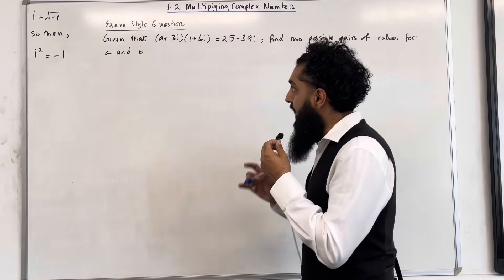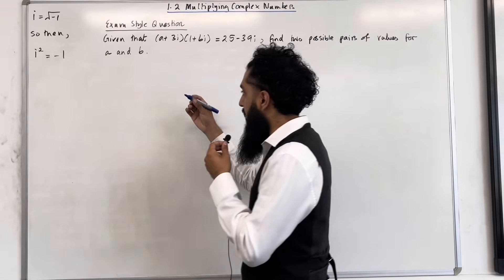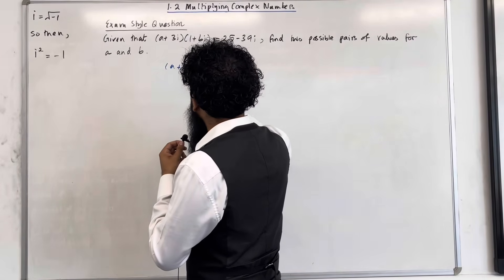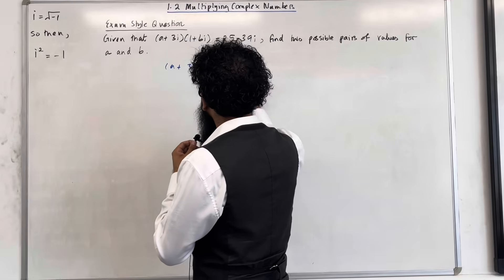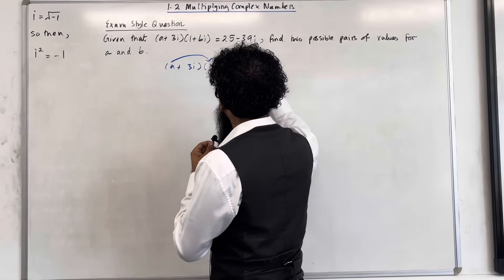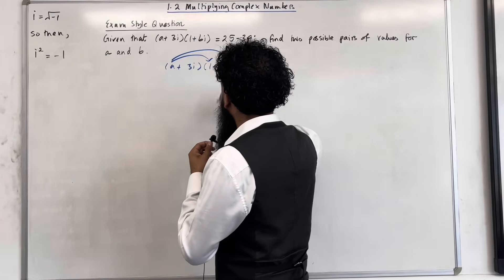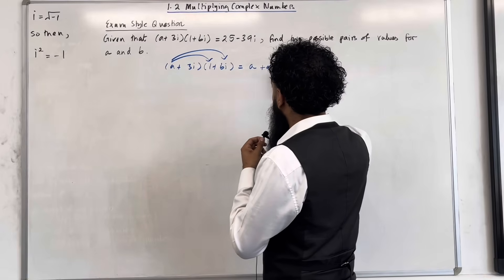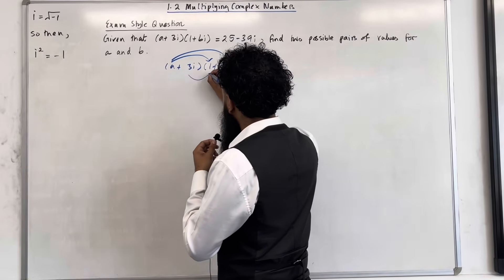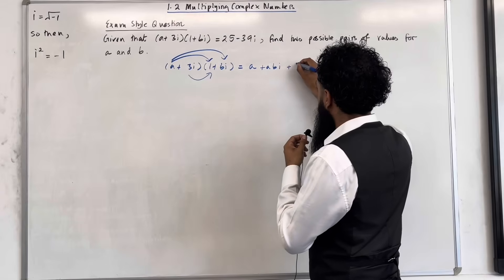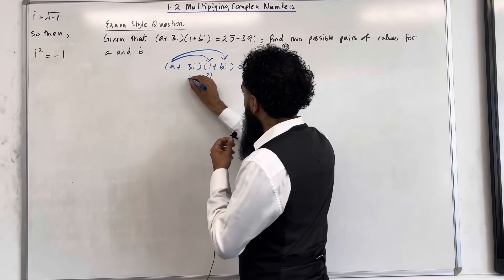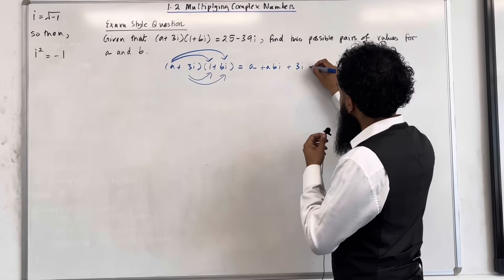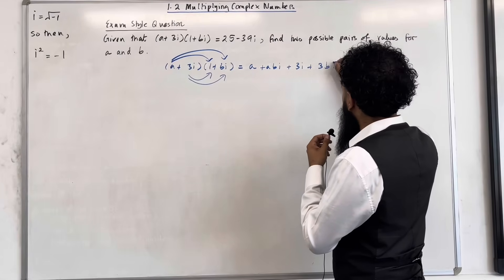I'm going to begin by expanding the double brackets. So I've got (a + 3i) multiplied by (1 + bi). a multiplied by 1 is a. a multiplied by positive bi is positive abi. 3i multiplied by 1 is positive 3i.